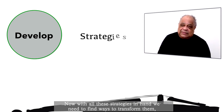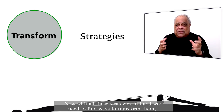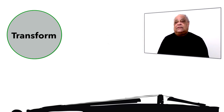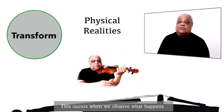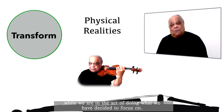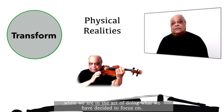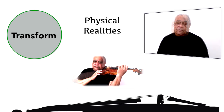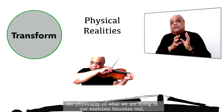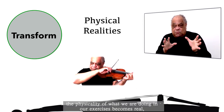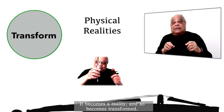Now with these strategies in hand, we need to find ways to transform them — turn them into physical realities. This occurs when we observe what happens while we're in the act of doing what we have decided to focus on. By turning our focus in this way, the physicality of what we are doing in our exercises becomes real, becomes a reality, and so becomes transformed.